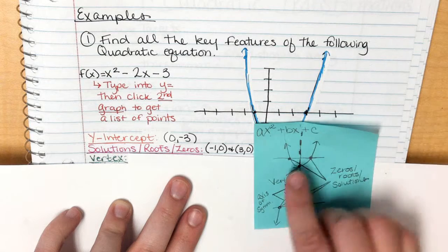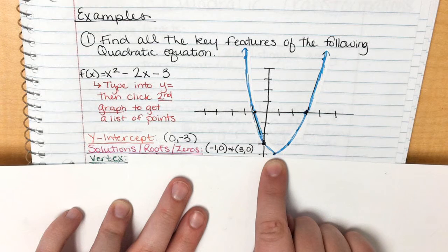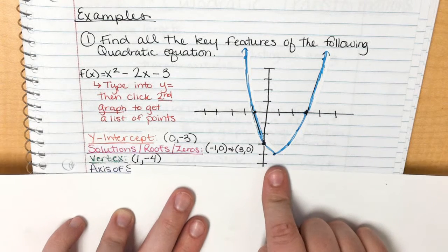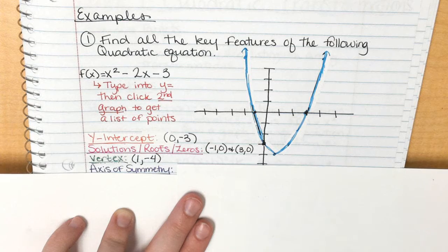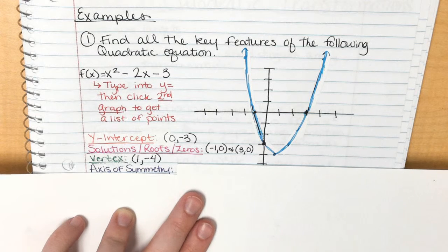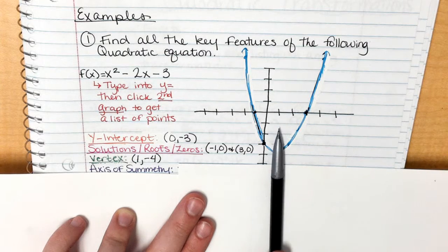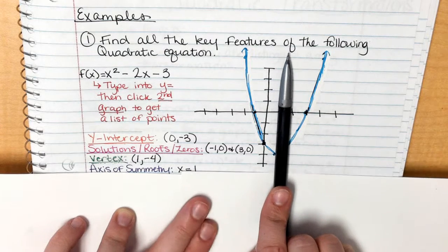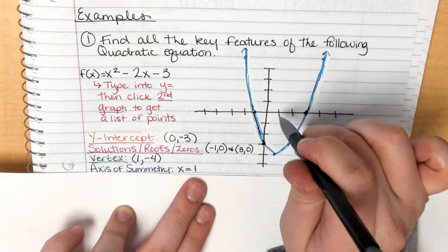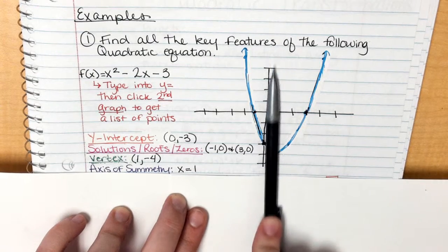The vertex is the lowest point on this graph, written as a coordinate point: (1, −4). The axis of symmetry is the vertical line through the vertex, which is x = 1. Notice we write x equals 1, not just 1 — x = 1 represents the entire vertical line.